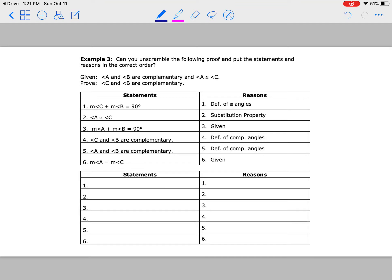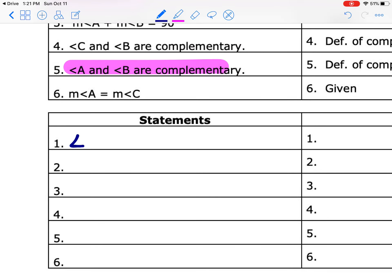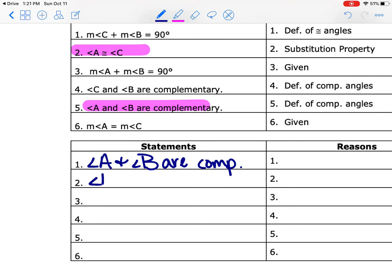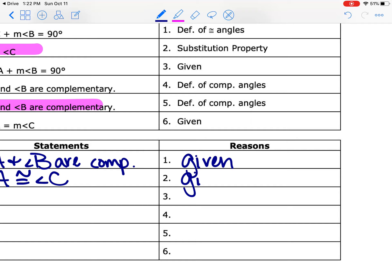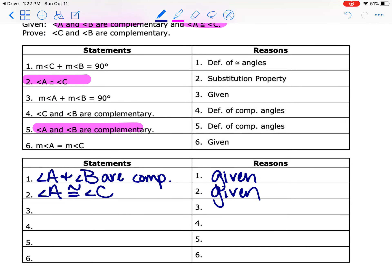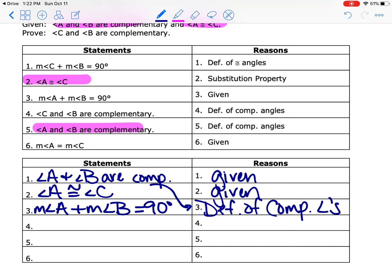Hopefully you paused it and tried it on your own. Let's see how you did. We have two givens — I see them right here and right here. Let's go ahead and bring those into steps one and two; it doesn't matter the order. One given is that angle A is congruent to angle C. We know that angle A and B are complementary — hopefully you looked up that definition — it says two angles add up to 90 degrees. So the measure of angle A plus the measure of angle B equals 90 degrees, and we knew that because of the definition of complementary angles.